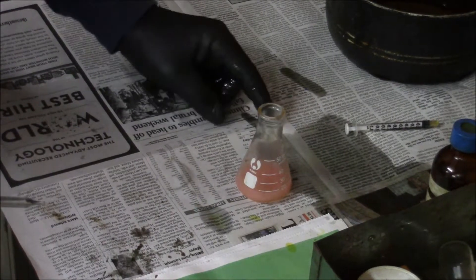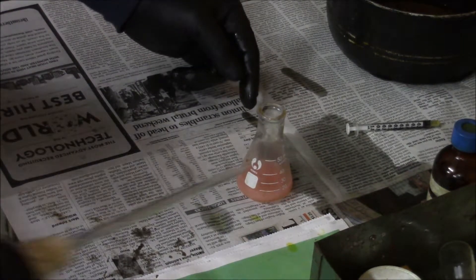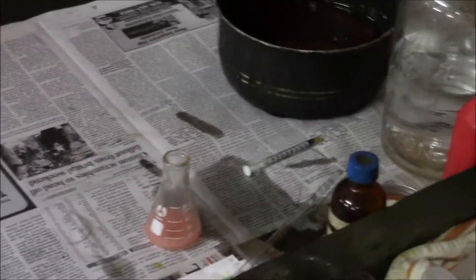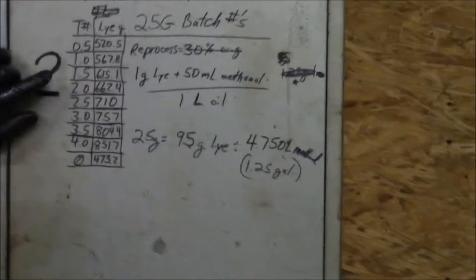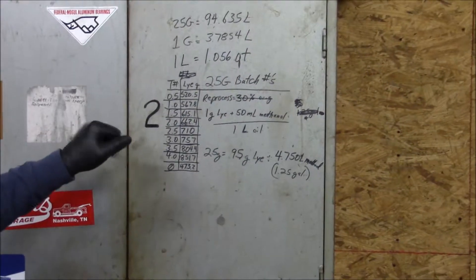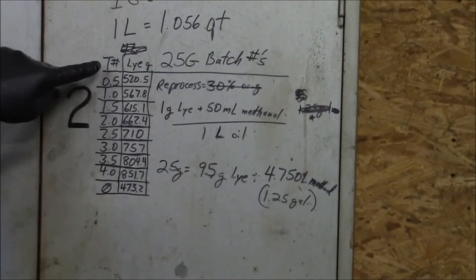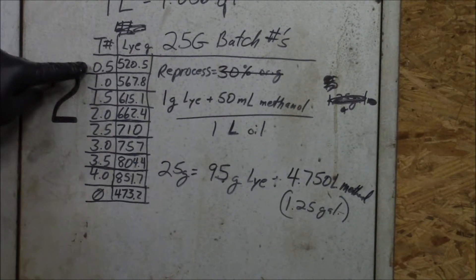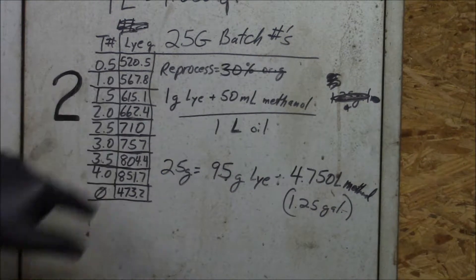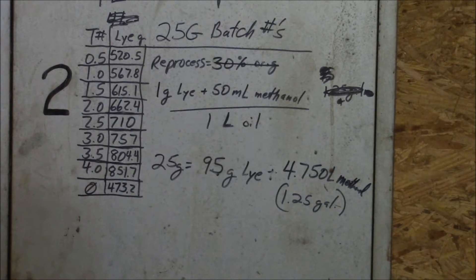A titration number of one means I need one additional gram of lye per liter of oil. I have over here a chart on my cabinet, and this is factored out to my batch size — a 25-gallon batch. This is my titration number: if it had taken only half a milliliter, my whole 25-gallon batch would need 520.5 grams of lye — over a pound. There are 454 grams in a pound.